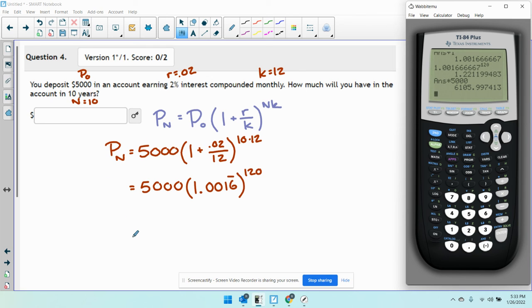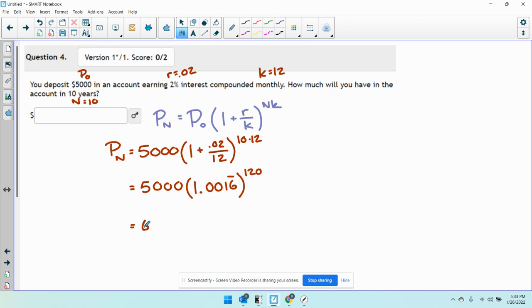So I get an answer of 6,105.997 or 6,106. Round to the nearest penny. It's weird, but it's going to round up like that. And that's going to be your answer.